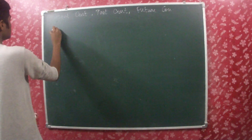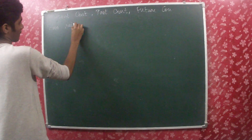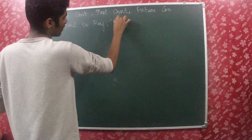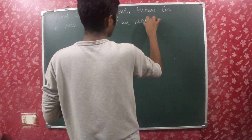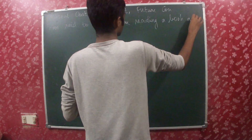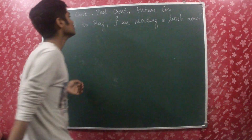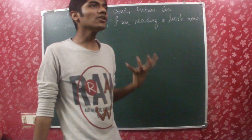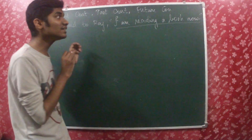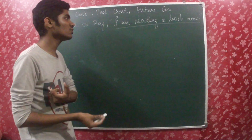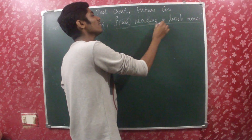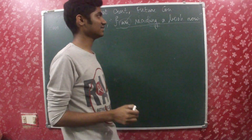Let me write a sentence first. Ram said to Raj, 'I am reading a book now.' So let's recall the rules. First of all, you have to look into the sentence which is given inside the double quotes. Here it is 'I am reading a book now.' It's present tense because 'am' is there and then we have '-ing', so it's present continuous tense.